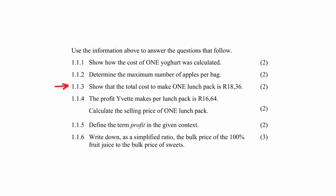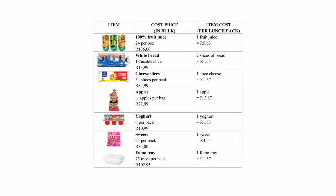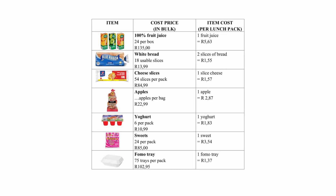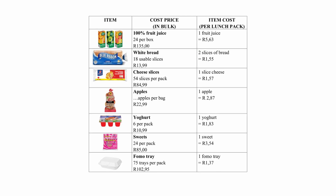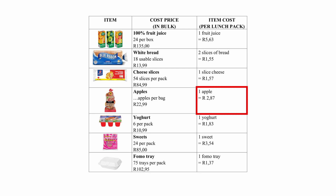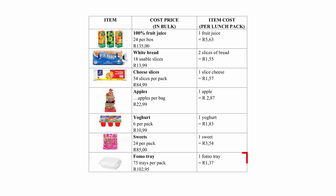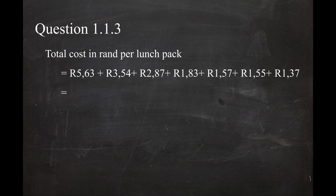In question 1.1.3, you have to show that the total cost to make one lunch pack is 18.36. The cost to make one lunch pack is the sum of the items per lunch pack. The cost of one lunch pack is 5.63 plus 1.55 plus 1.57 plus 2.87 plus 1.83 plus 3.54 plus 1.37, and this equals 18.36.